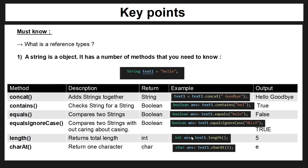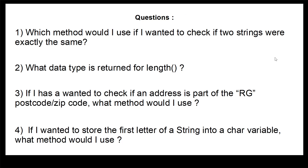The charAt method returns one character. The important thing about this method is that it uses a zero-index system, so the first index is zero, then one, then two, and so on. For example, if we look at index 1 in "hello", the output would be "e". I'll be including a summary table in the description below. Hopefully you can use this information to answer the following questions — pause the video now and see if you can answer them.